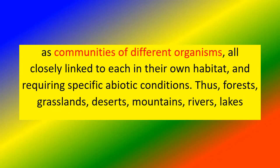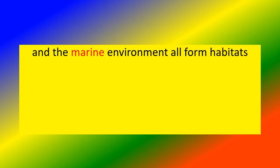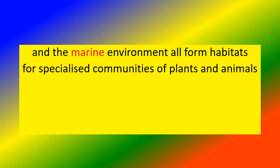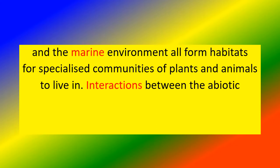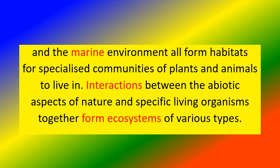Thus, forests, grasslands, deserts, mountains, rivers, lakes, and the marine environment all form habitats for specialized communities of plants and animals to live in. Interactions between the abiotic aspects of nature and specific living organisms together form ecosystems of various types.